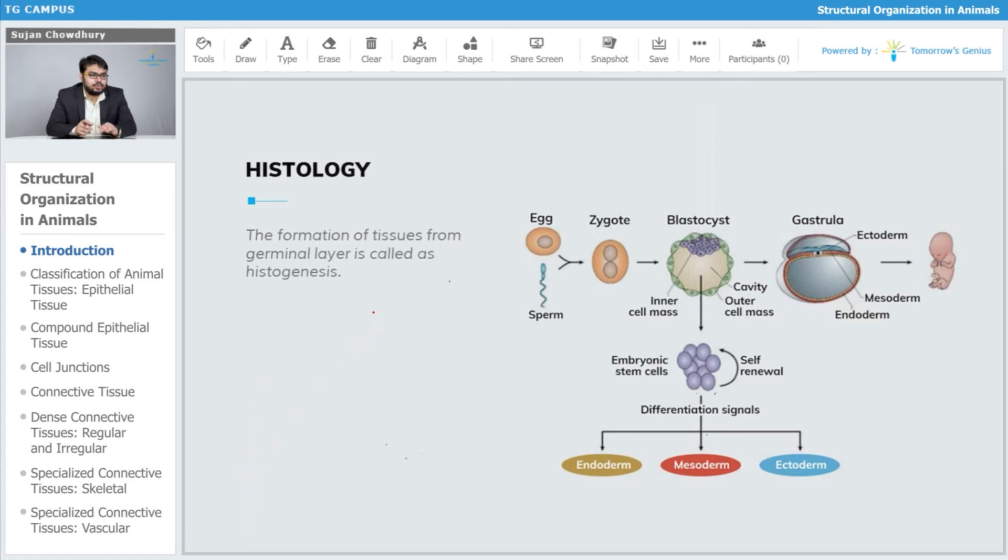The formation of tissues from germinal layer is called histogenesis. The word genesis means formation or generation, so histogenesis is the formation of tissue, and it is formed from the germinal layer.